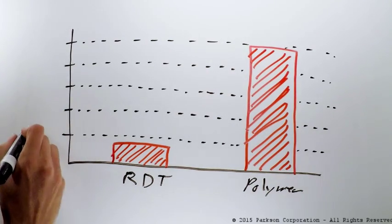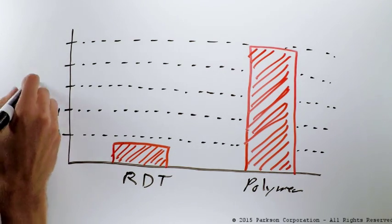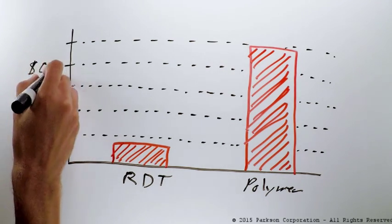Much like the cell phone example, a sludge thickener's life cycle costs are heavily weighted towards operational costs, which in the case of thickening is polymer usage.